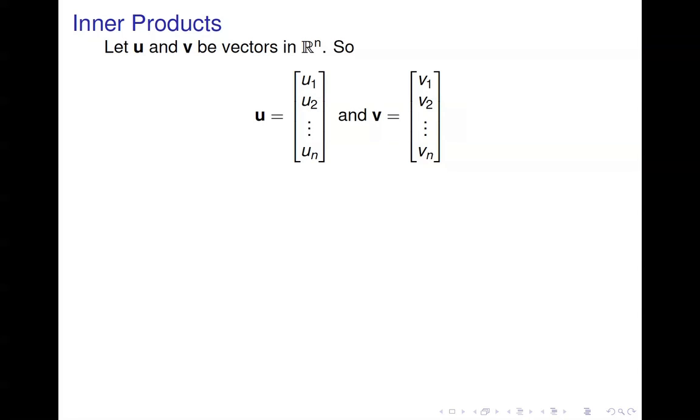The inner product is defined on two vectors that have to be the same length. So suppose u and v are vectors in R^n. The inner product, also called the dot product of u and v, is given by u1 times v1 plus u2 times v2 plus dot dot dot un times vn. We simply match up corresponding elements, multiply, and then add them all up. The notation is indicated here with a dot, u dot v, and that's where the term dot product came from.